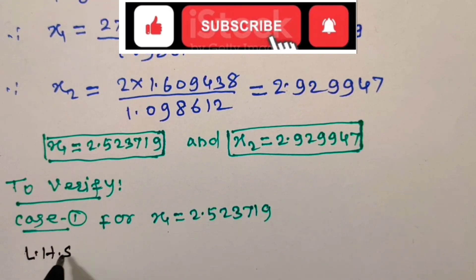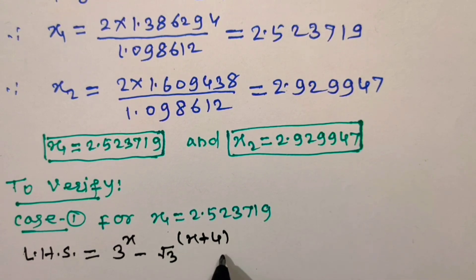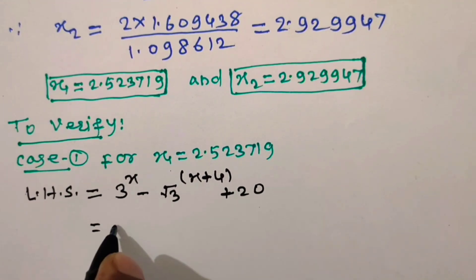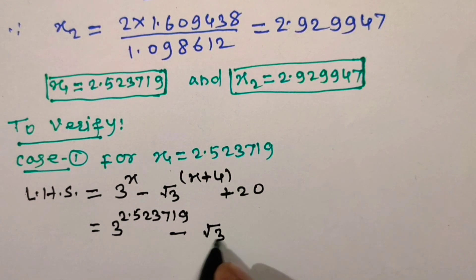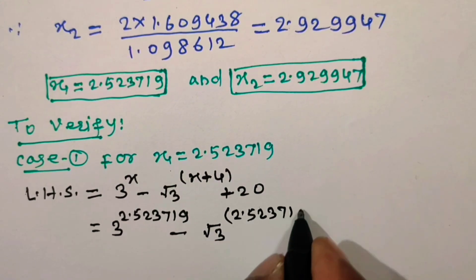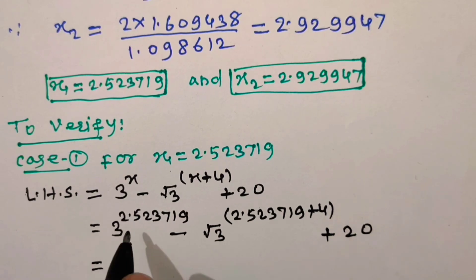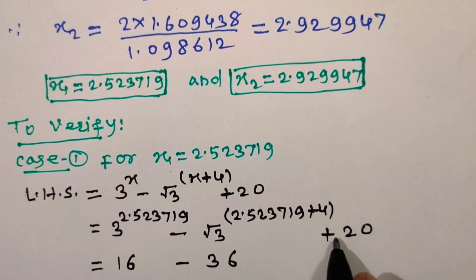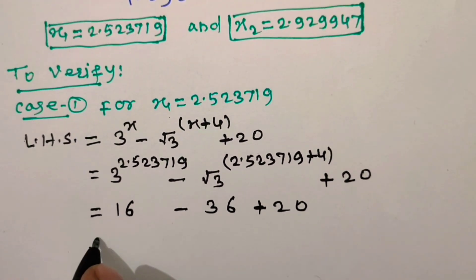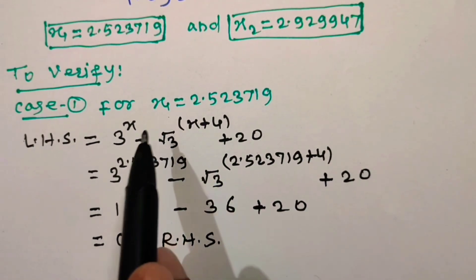Let us verify x1 equals 2.523719. The left hand side of the given equation is 3 to the power x minus square root of 3 to the power x plus 4 plus 20. Replacing x by x1, this becomes 3 to the power 2.523719 minus square root of 3 to the power 2.523719 plus 4 plus 20, which is approximately 16 minus 36 plus 20, which equals 0. This equals the right hand side, so x1 satisfies the given equation.